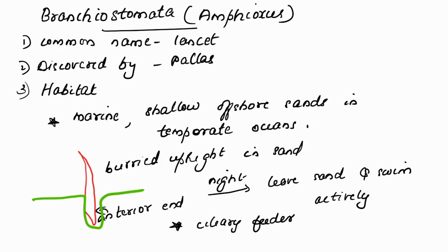Now we learn about the typical example: Branchiostoma or Amphioxus, which is very important. Its common name is lancet, and this organism was discovered by Pallas. Habitat: Amphioxus is marine and found in shallow offshore sands in temperate oceans near the shore. They bury their anterior end down into the burrow during the day, and during nighttime they come out and swim actively in the water.